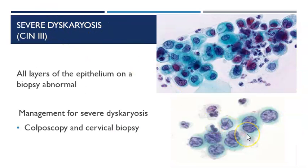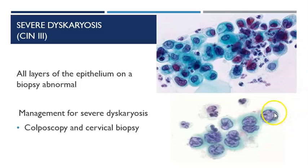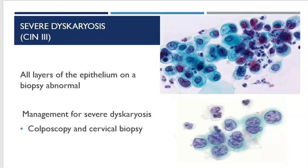Then we've got severe dyskaryosis, which in this case has been taken from CIN3. We've got very irregular cells, very small cytoplasm, very large nucleus, lots of variation within the nuclei, and very uneven chromatin. These will be managed with a cervical biopsy to see whether that is CIN3 or whether it is indeed cancer, because you can't be sure — the cells you scrape off the surface may look identical from CIN3 and from cancer. Therefore you need the cervical biopsy to tell you for certain whether those cells are invasive cancer or whether they are still at the CIN3 stage.